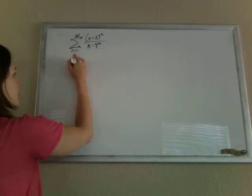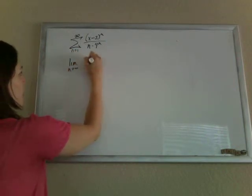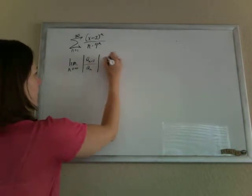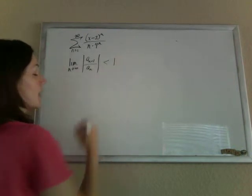So the ratio test says that if the limit as n goes to infinity of a sub n plus 1 over a sub n, absolute value, is less than 1, then it'll converge.